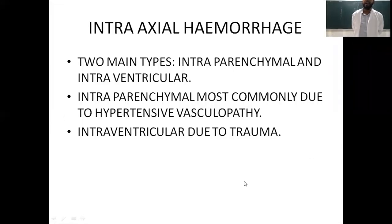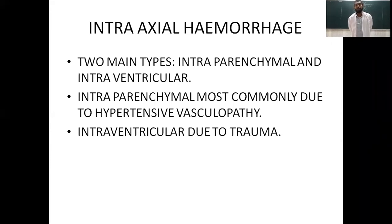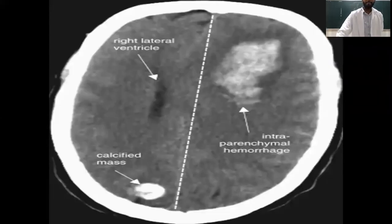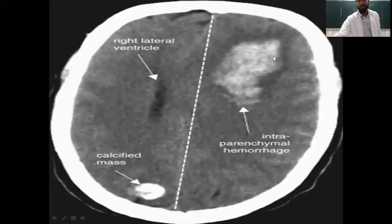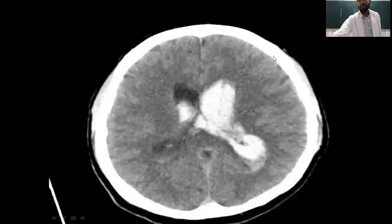Intra-axial hemorrhage has two main types: intraparenchymal — most commonly due to hypertensive vasculopathy — and intraventricular, which occurs due to trauma. Images demonstrate intraparenchymal hemorrhage and intraventricular bleed.